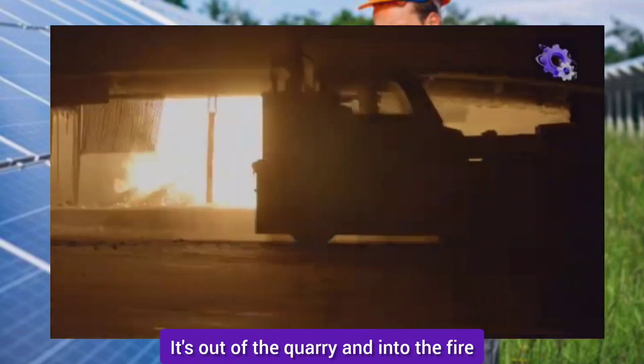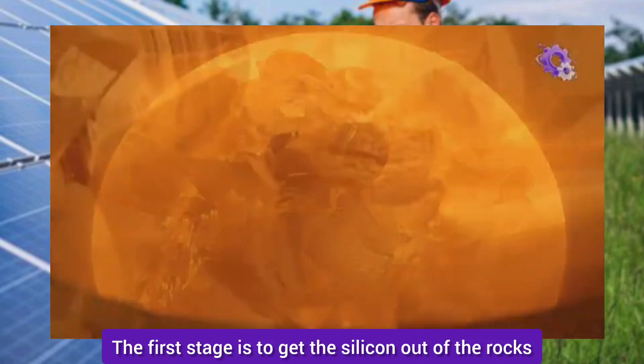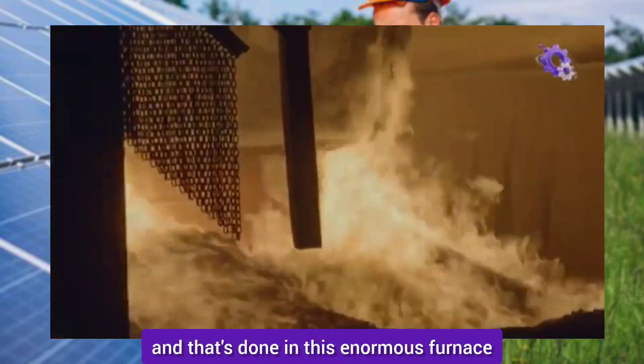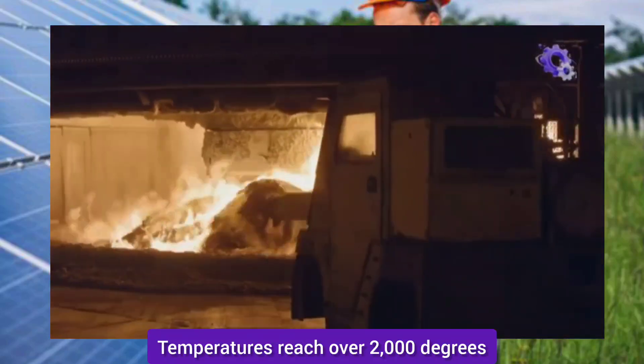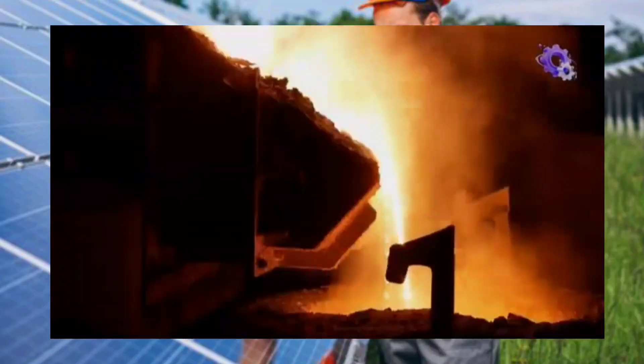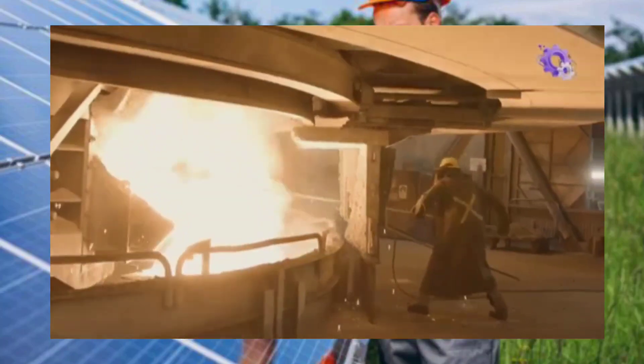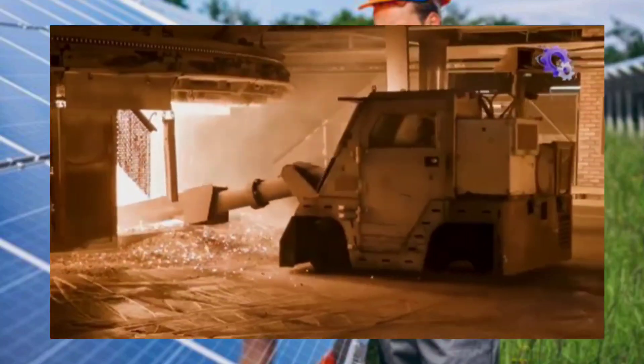It's out of the quarry and into the fire. The first stage is to get the silicon out of the rocks, and that's done in this enormous furnace. Temperatures reach over 2,000 degrees Celsius. This is unbelievably hot and also quite dangerous.